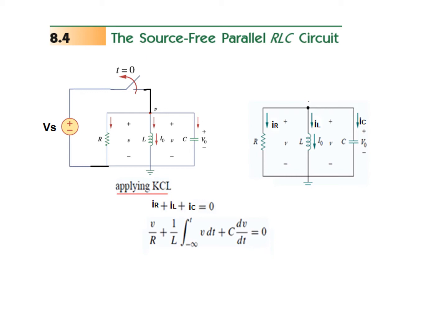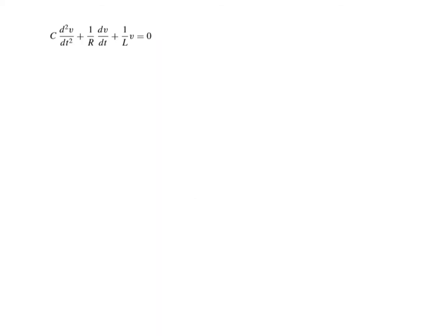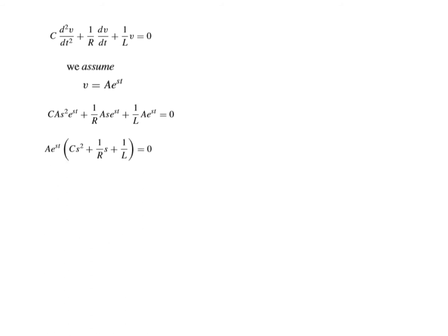Since there is both an integral and a differential, we differentiate the equation again to eliminate the integral, giving us an equation entirely in differential form. We then assume the voltage is given by the exponential form V = A·e^(st) — just as we assumed current in the series case, here we assume voltage. Substituting and differentiating gives us the resulting terms.